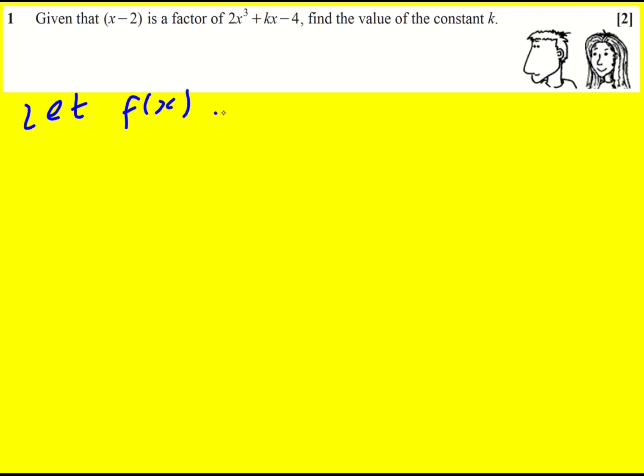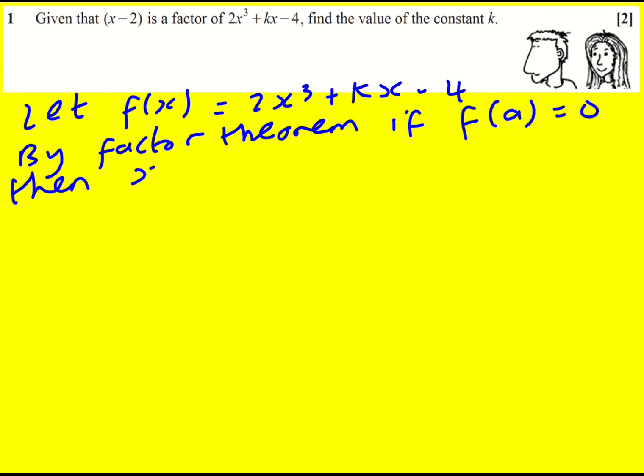So I'm actually going to let f of x equal 2x cubed plus kx minus 4. And then by the factor theorem, if f of a equals 0, then x minus a is a factor. That's the key thing we're using in this question, and vice versa. Technically, this is called an if-and-only-if relationship because it works both ways.